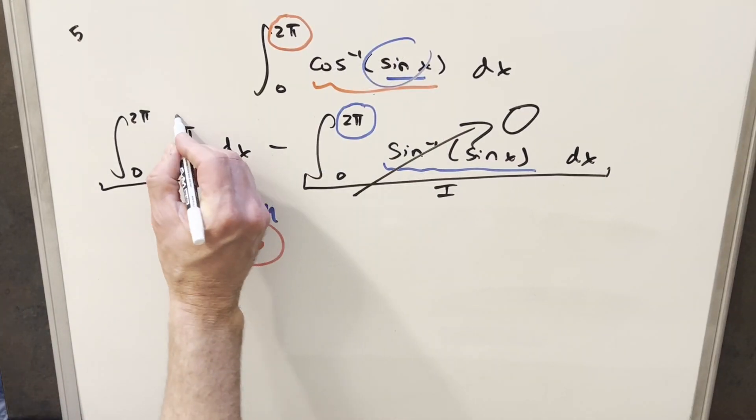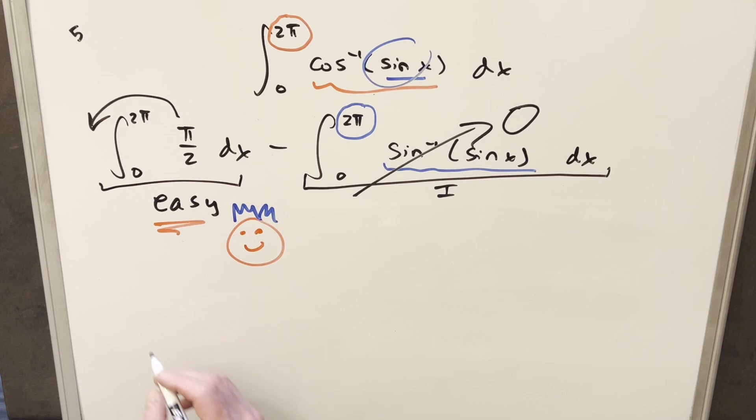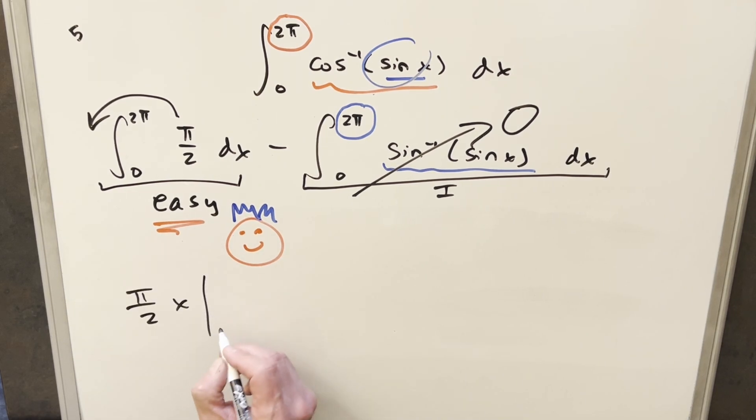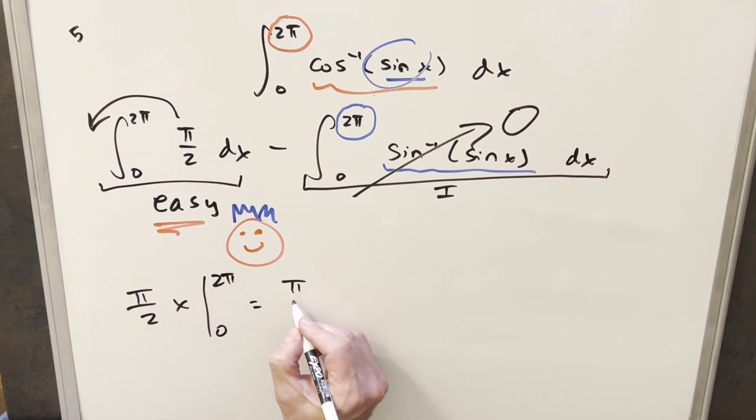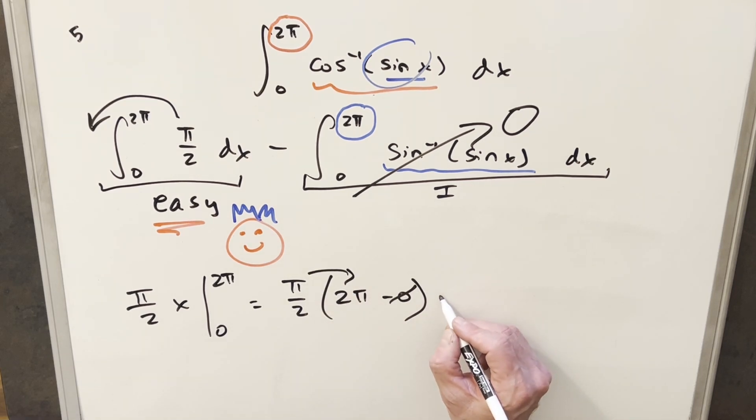Okay, so now it's easy integral time. Of course, this is a constant. We can bring this up front. And so when we integrate this, we just get pi over 2 times x evaluated from 0 to 2 pi. Plugging this in, we're going to have pi over 2. We plug in 2 pi, we're going to have 2 pi minus 0 here. Distributing it out, pi over 2 times 2 pi gives me my final solution of just pi squared.